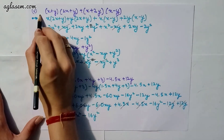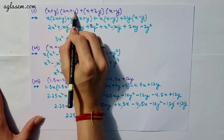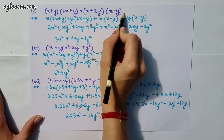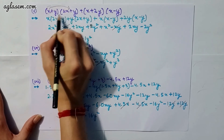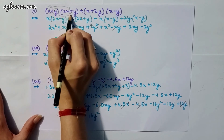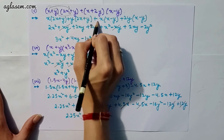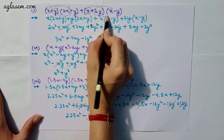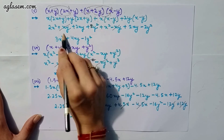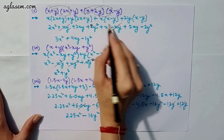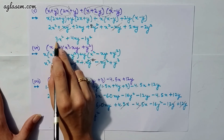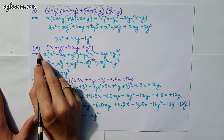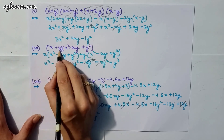Moving to the fifth part: (x + y)(2x + y) + (x + 2y)(x − y). x will be multiplied by the first bracket and y will be multiplied by it, then x will be multiplied by the second bracket and 2y by it. The +xy and −xy terms cancel, and the answer will be 3x² + 4xy − y².